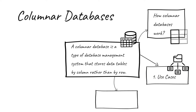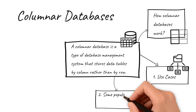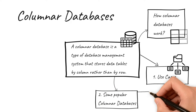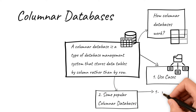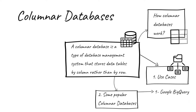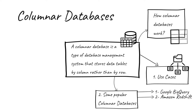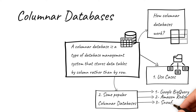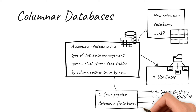Some popular columnar databases are: 1. Google BigQuery — it uses the Dremel columnar storage engine and also provides a distributed SQL query engine. 2. Amazon Redshift — columnar storage and MPP architecture. 3. Snowflake — it is built on Amazon S3 and virtual warehouses in EC2, with columnar storage across clusters.